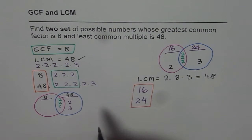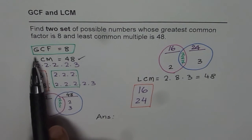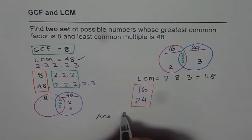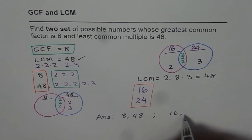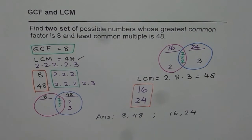So we get our answers. The two sets of numbers which satisfy our condition — that is greatest common factor of 8 and least common multiple of 48 — are either 8 and 48, or 16 and 24. In 16 and 24 also we have a greatest common factor of 8 and a least common multiple of 48. I hope that is interesting and you appreciate the whole process of finding the numbers given greatest common factor and least common multiple.